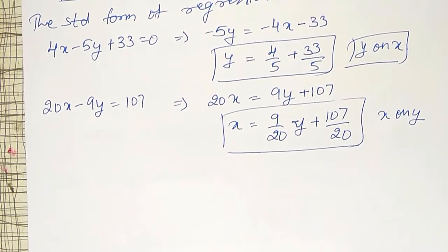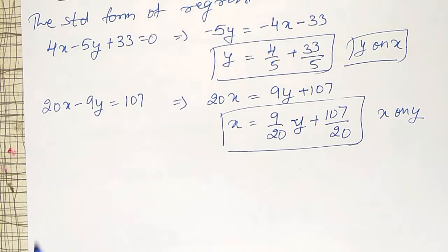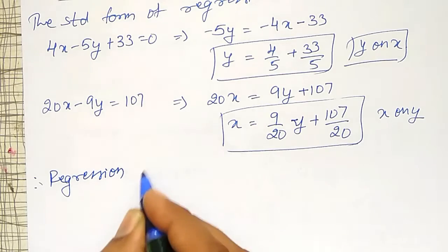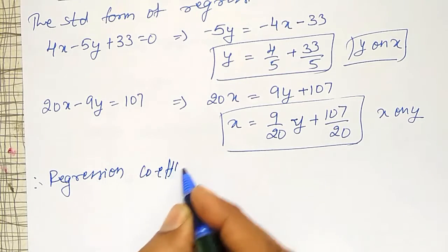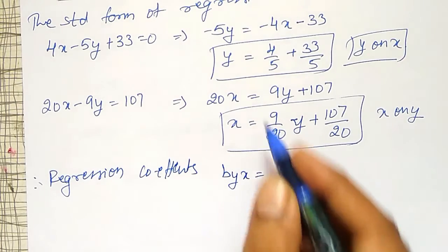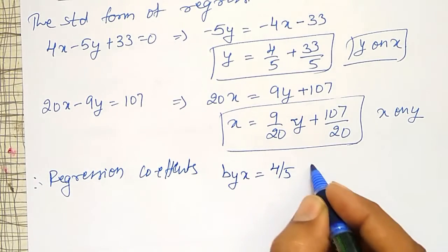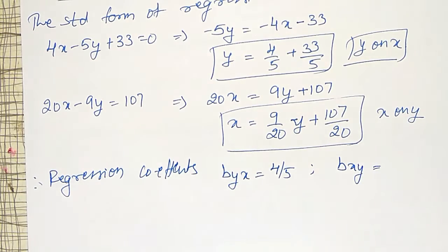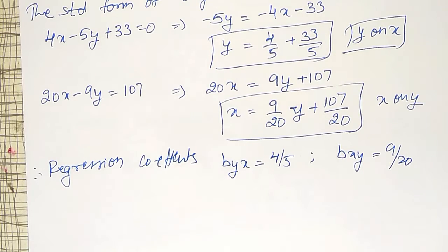From these two regression coefficients I can write. Therefore, regression coefficient byx is nothing but 4/5, and bxy is nothing but 9/20. Using these two, I can find out the standard deviation in y.